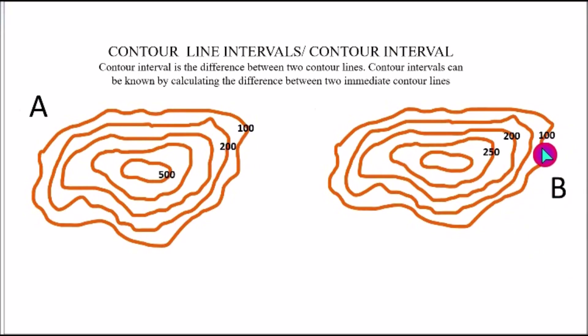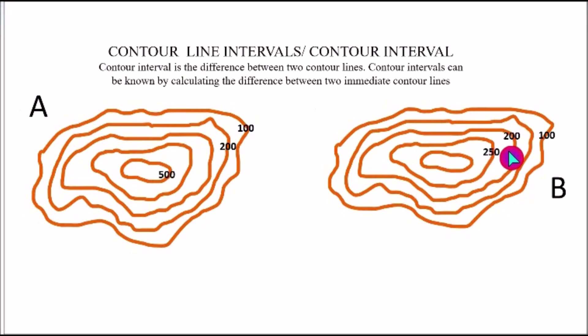For contour B, the first contour is 100. The next contour is not numbered, but the third contour is 200. You cannot subtract 100 from 200 because you would be jumping a contour, so you would not know the true interval. Instead, you use two immediate contours: 200 and 250. When you subtract 200 from 250, you get a difference of 50. So the contour interval for contour B is 50 meters or 50 feet. This is how contour interval is calculated.